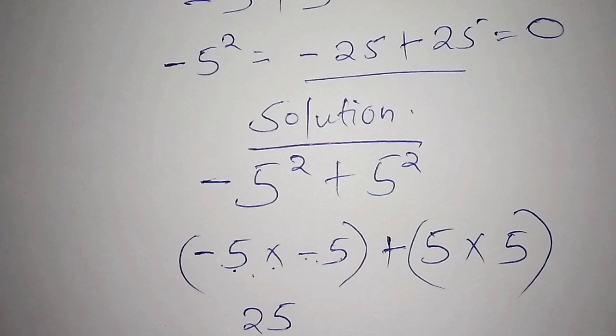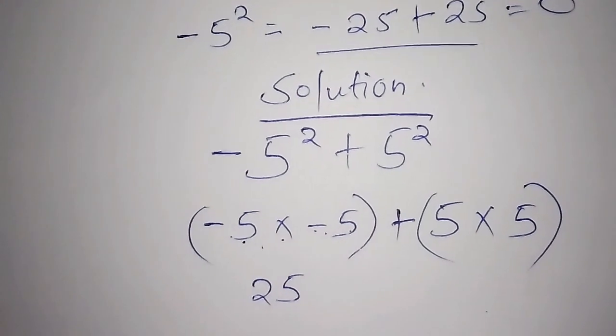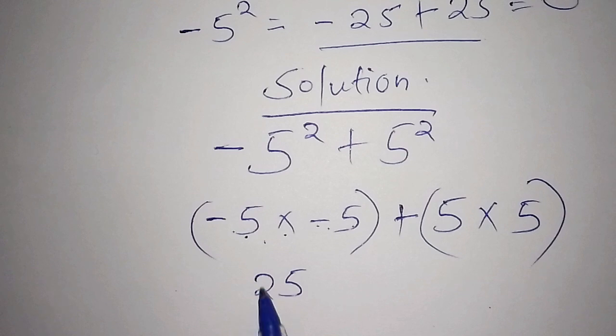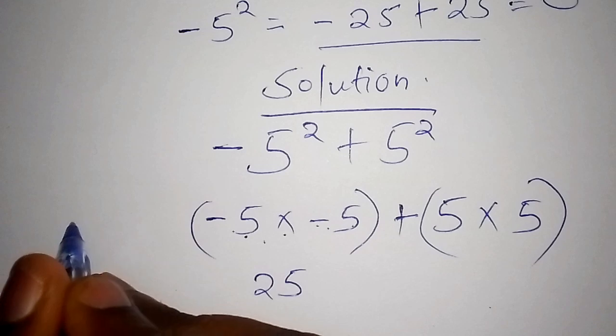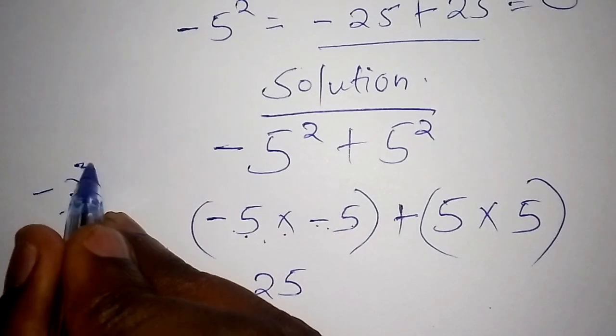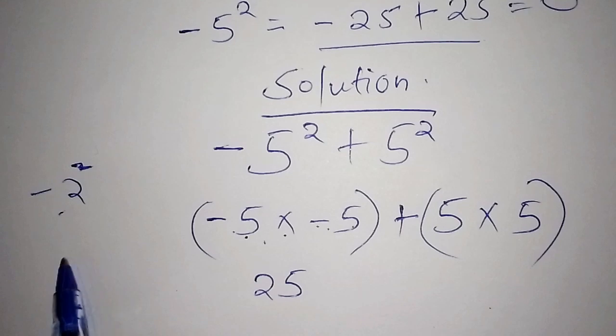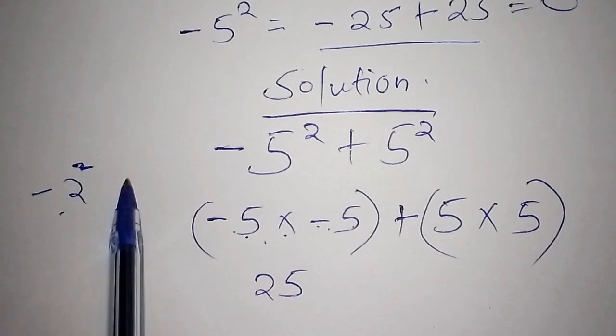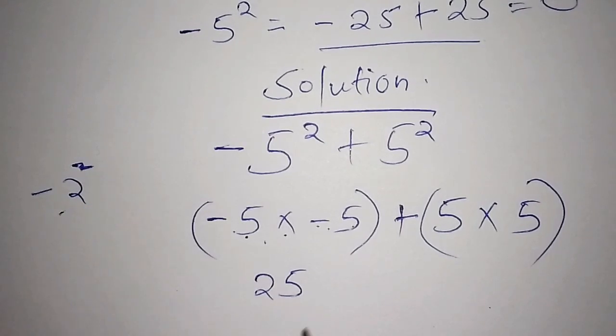For an example, you can have a number like minus 2. When you have minus 2 and you power minus 2, you shall end up with minus 2 multiply by minus 2, that shall be positive 4, same way we've done here.